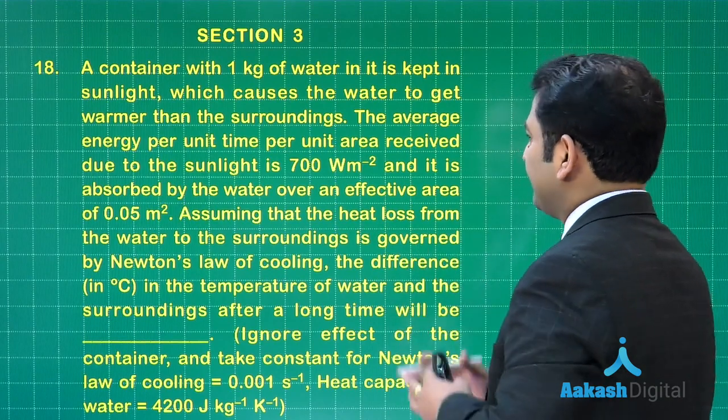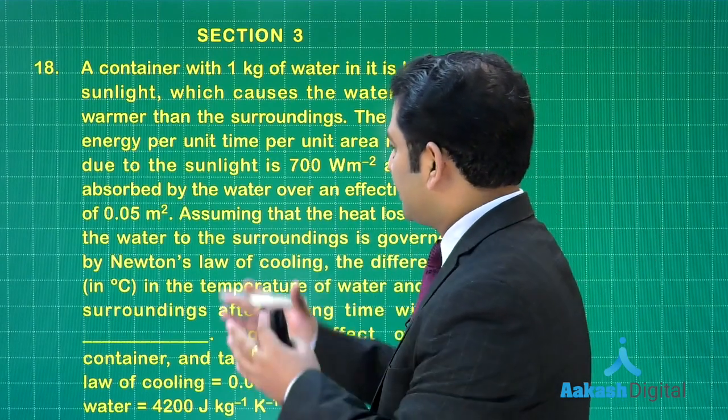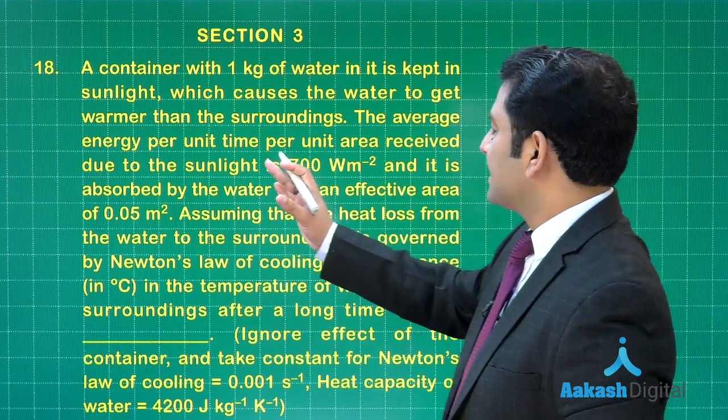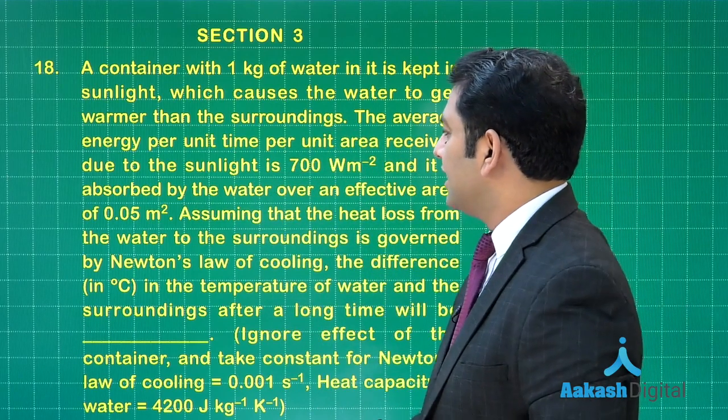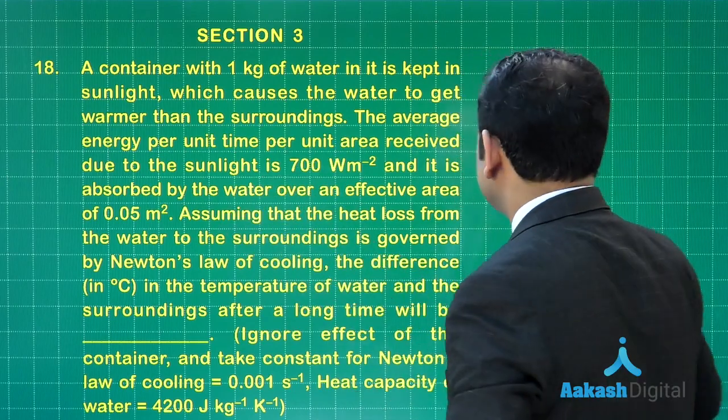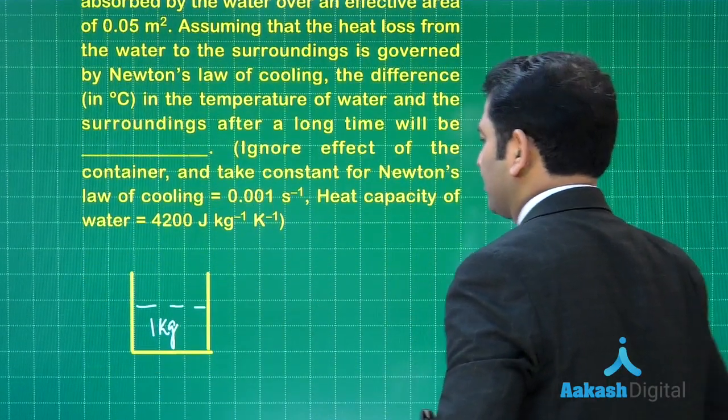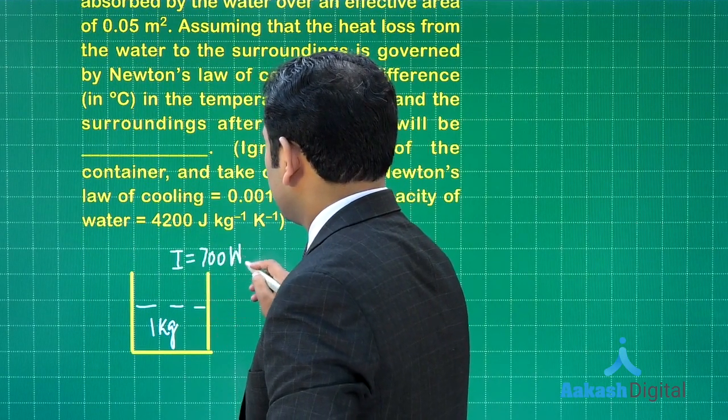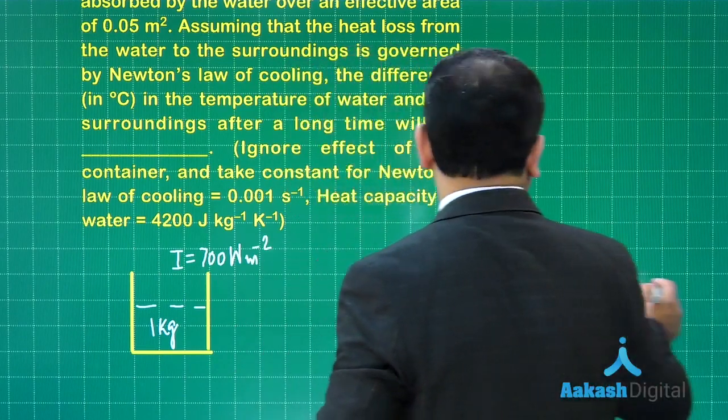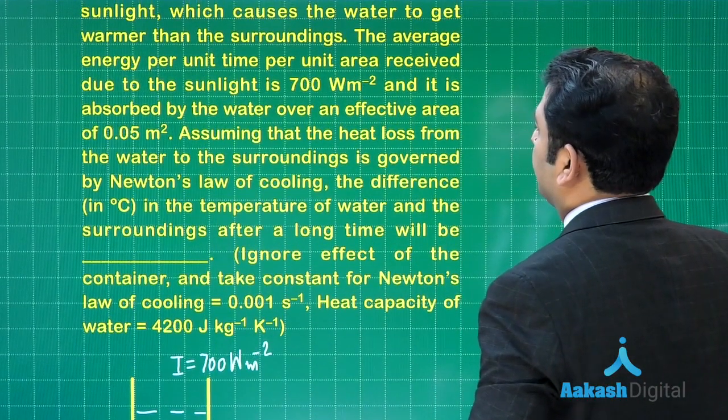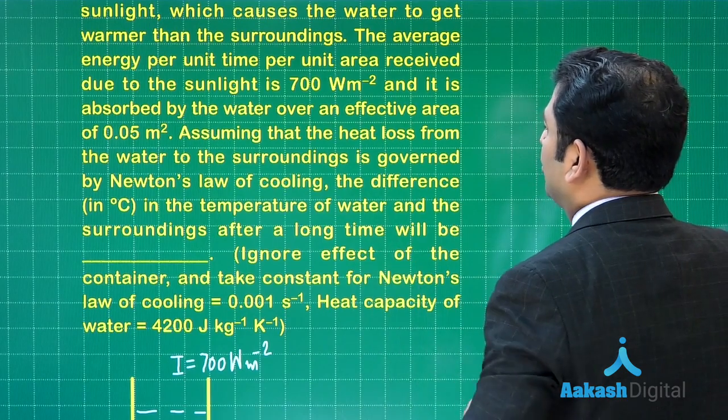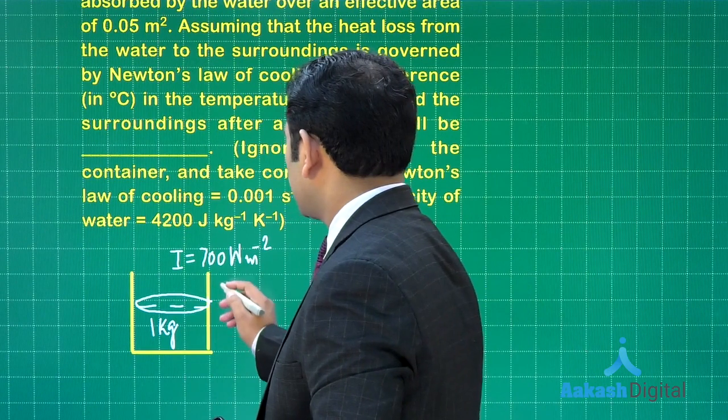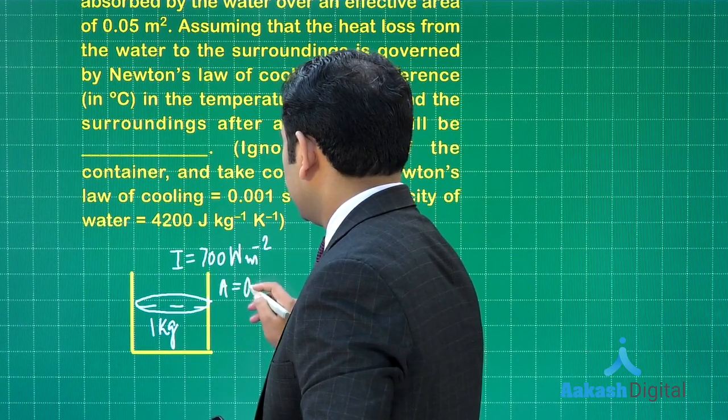It is kept in sunlight and because the water absorbs, it is warmer than the surrounding. The average energy per unit time per unit area received due to sunlight is 700 watt per meter square. That means the value of intensity is 700 watt per meter square. And it is absorbed by the water over an effective area of 0.05 meter square.